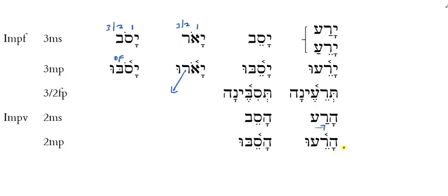Congratulations — we are now done not just with the geminate verb chapter, but with all of the varied and manifold weak verbs in the Hebrew verbal system.